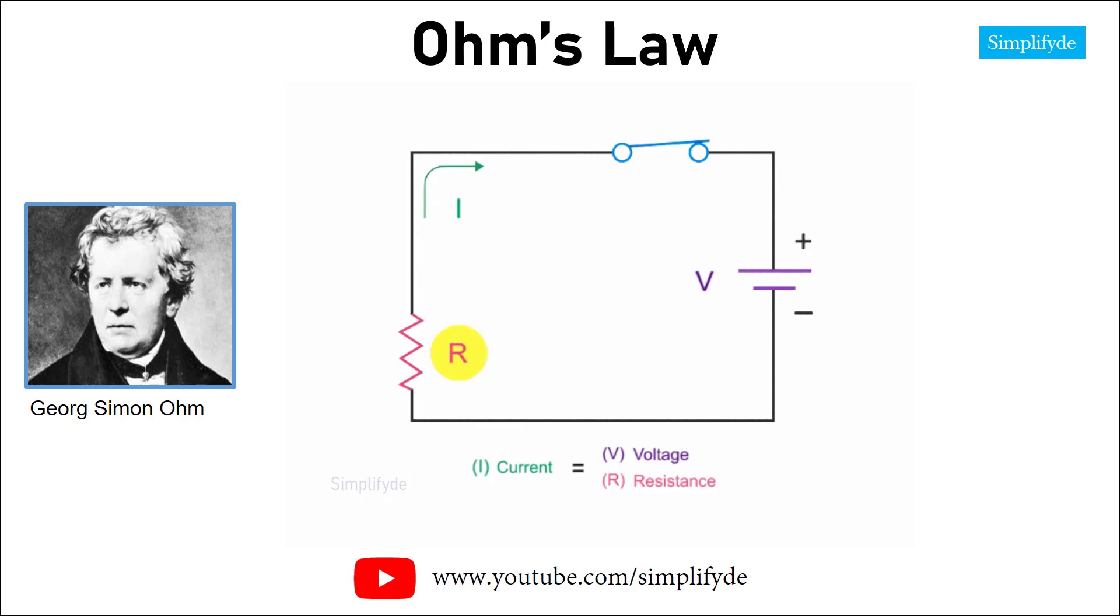As resistance in a circuit increases and voltage remains constant, the current flow decreases.